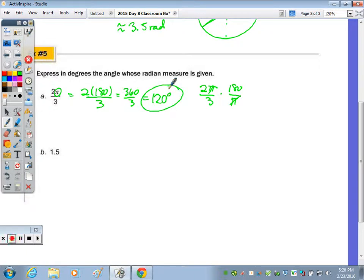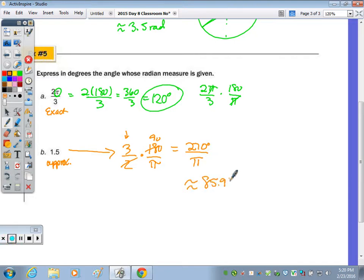When you're given an approximate radian measure, where this is an exact radian measure, this is not in terms of pi, so it's approximate. I would rewrite that in terms of a fraction, so 1 and 1 half is 3 over 2, and then multiply by 180 over pi. Because you don't have a pi in your original fraction, because it's not exact, there's going to be no cancellation of pi. We can cross-cancel here, and we end up with 270 over pi, which is approximately 85.9 degrees.